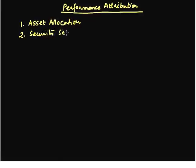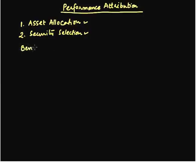So two reasons: asset allocation and security selection within each asset class. Since each asset class contributes something to portfolio performance, we need to see how much of this contribution is because of our asset allocation decisions and how much is because of our security selection. Let us say we have a benchmark for each asset class — let me write this word here: benchmark.